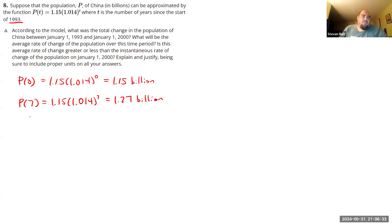Okay, so we need the total change. So our change in population is going to be 1.27 billion minus 1.15 billion. So that'll be 0.12 billion people. Okay, so that's the total change.